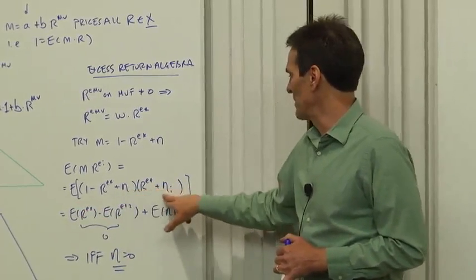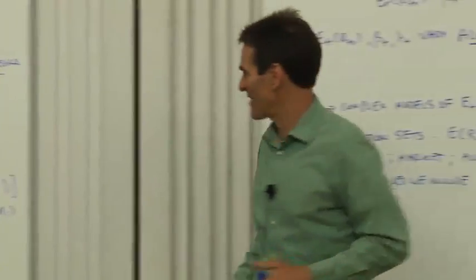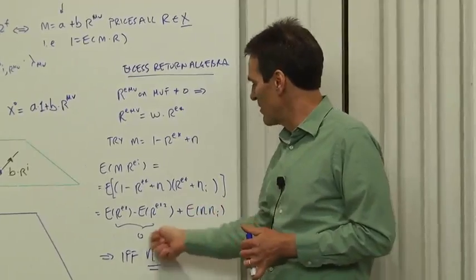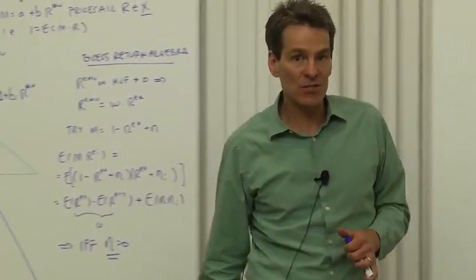Then I've got the eta term, E of eta eta prime, and all the cross terms are zero because everything's orthogonal. So I'm looking for zero here and I've got zero if and only if eta is zero, i.e. if my original return was on the mean variance frontier.